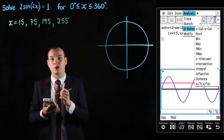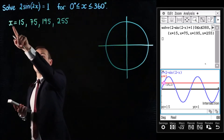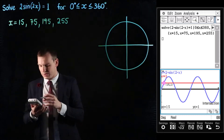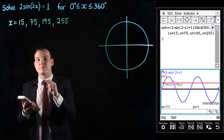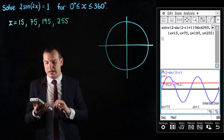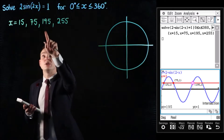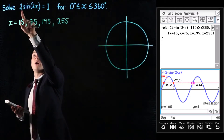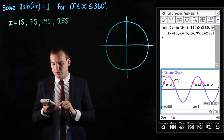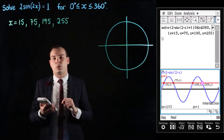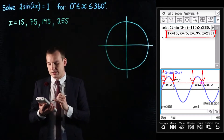Now if I go to analysis, g-solve, and look for the intersection points of those two lines, I can hit intersection and it brings up the first one with coordinate 15, 1. So when x is 15 this equals 1 — that's handy. I lock that on by hitting execute, then move across to the next point using the right arrow on the hard keypad, which comes up as 75, 1. Going across again gives 195, 1 as our third solution — these are the intersection points between 2 sine of 2x and the line y equals 1. Tabbing across once more we find the final solution is 255, 1. So those four intersection points confirm the four solutions we found in the main screen.